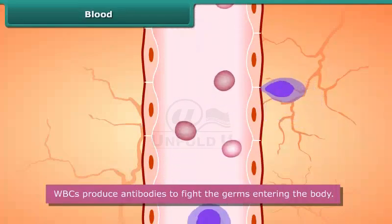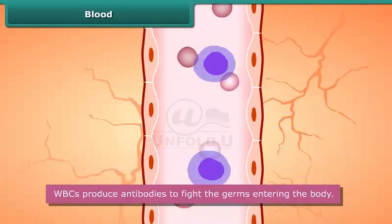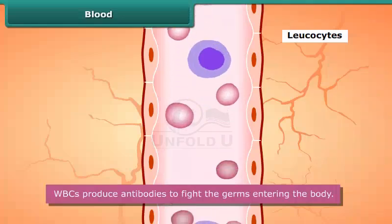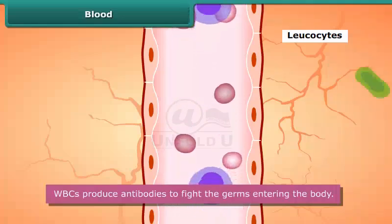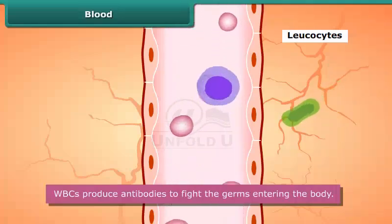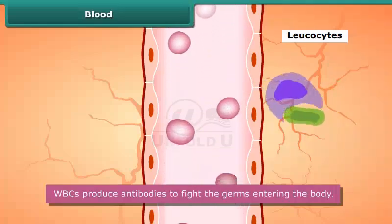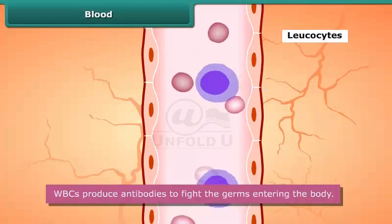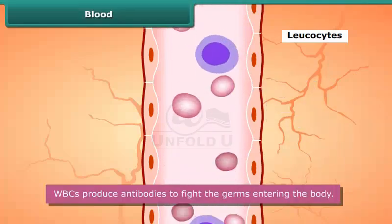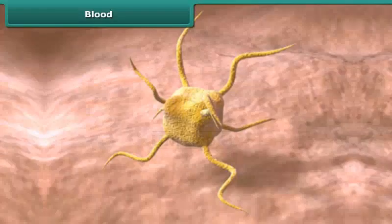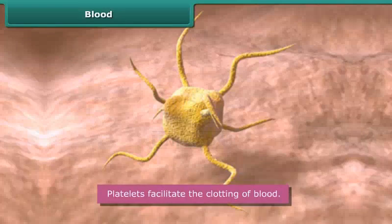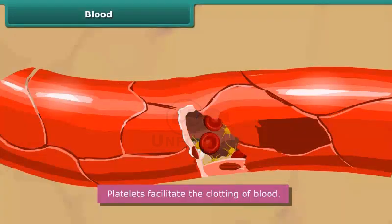WBCs are also known as leukocytes. They come in many different shapes and produce antibodies to fight the germs entering the body. Platelets are also known as thrombocytes. They are oval in shape and facilitate the clotting of blood.